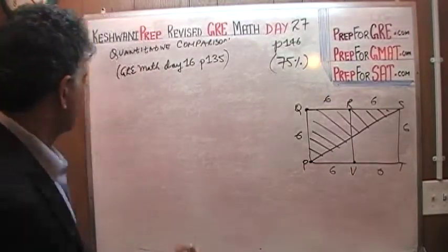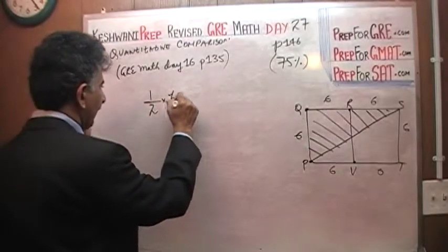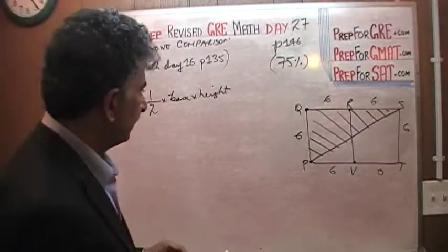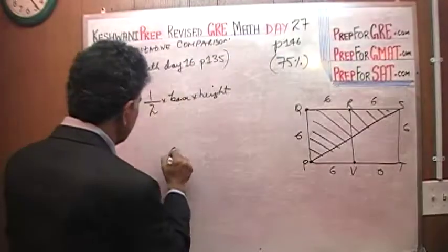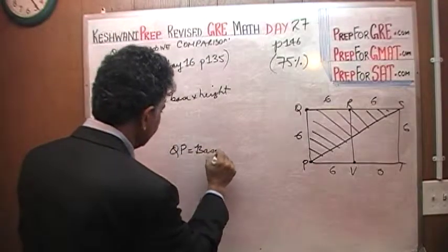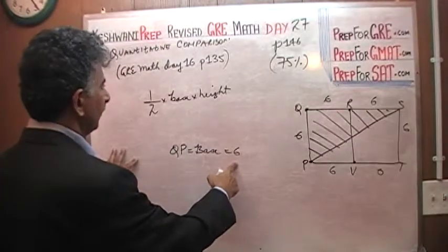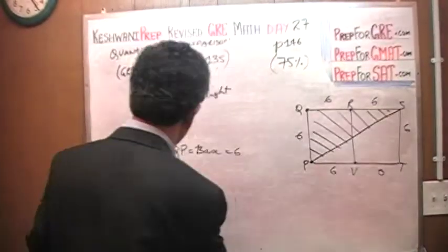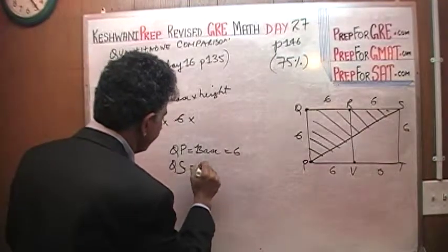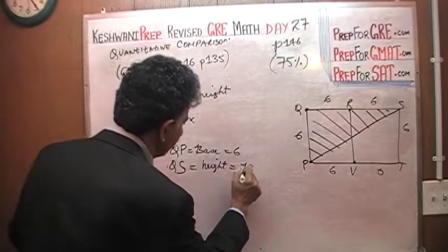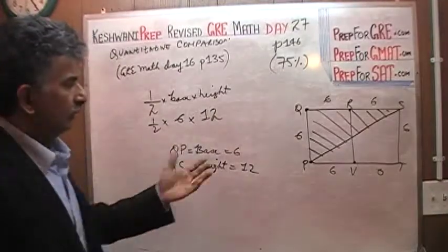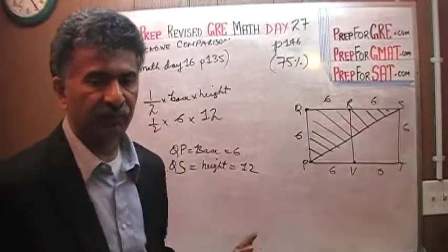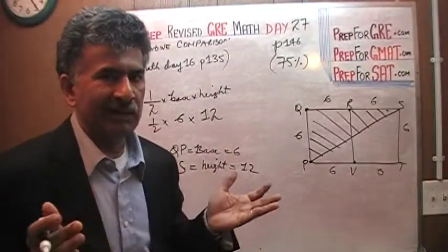There are two ways to approach this. One is the straightforward method: one-half base times height. We treat QP as the base, which is 6, and QS as the height, which is 12. So it's one-half times 6 times 12.